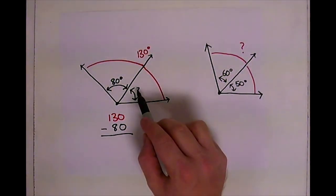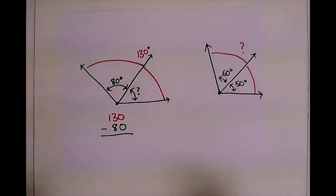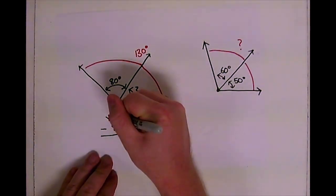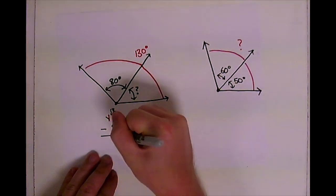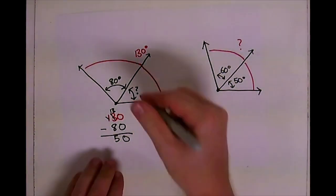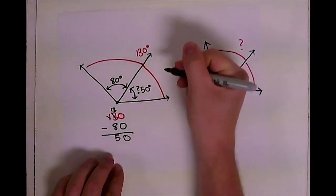So when we're trying to find a part of a bigger angle, we're going to subtract it. So as we subtract this, we borrow and that becomes 50. So this is 50 degrees.